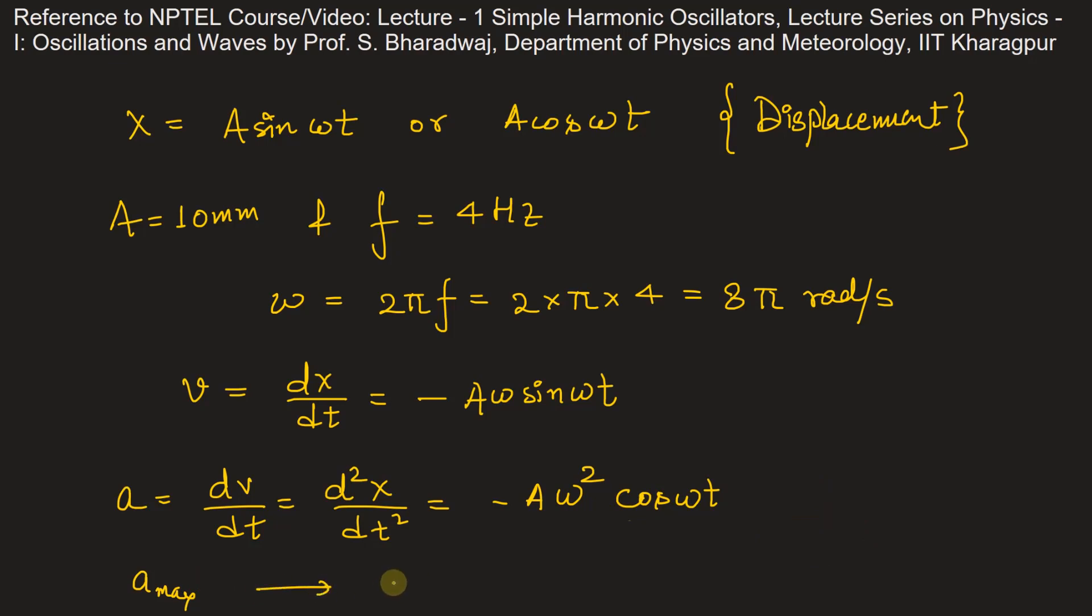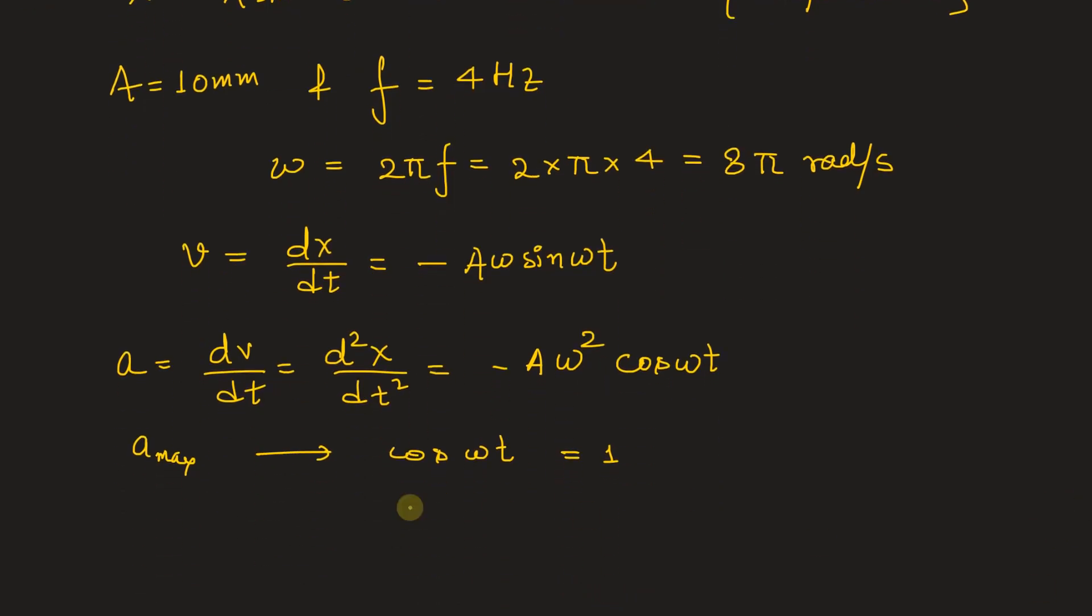The maximum acceleration a_max will be equal to negative A omega square, or the magnitude, modulus of maximum acceleration, will be A omega square. A is equal to 0.01 meters times 8 pi square.